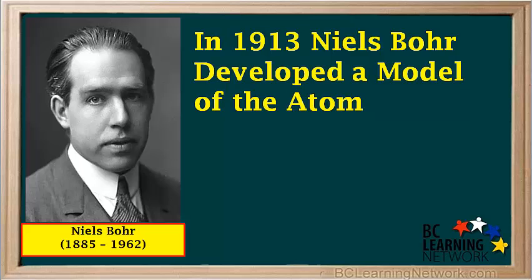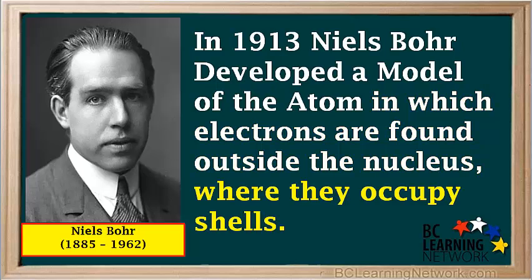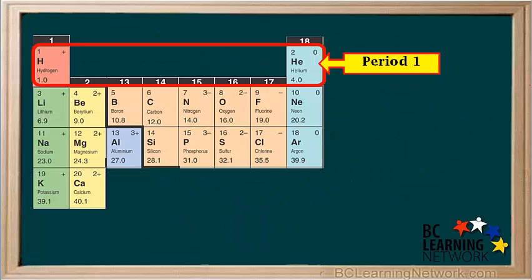In 1913, Niels Bohr developed a model of the atom in which electrons are found outside the nucleus, where they occupy shells. A shell can be visualized as a three-dimensional form of an orbit, like the outer surface of a sphere. In our model, for the sake of simplicity, we'll represent shells as two-dimensional orbits. We'll use a simplified version of the periodic table, which shows only the first 20 elements.